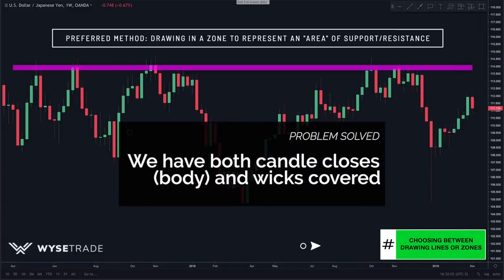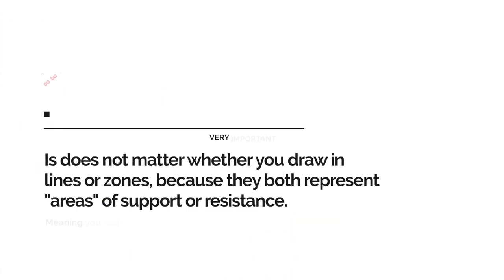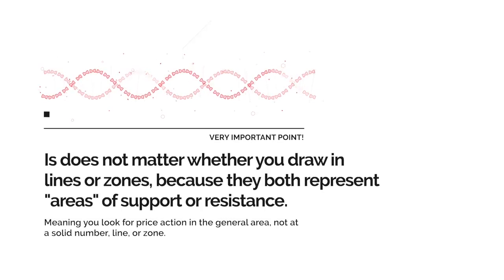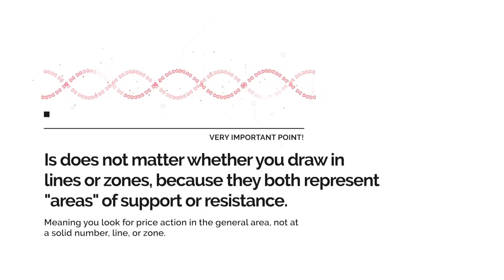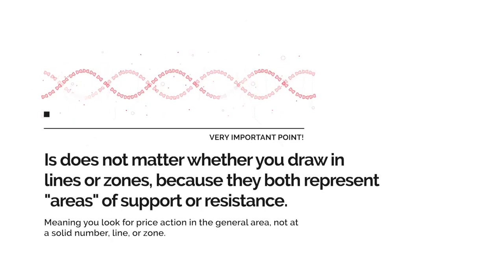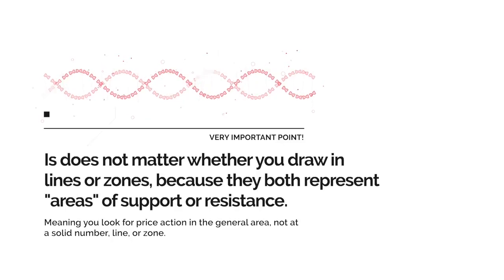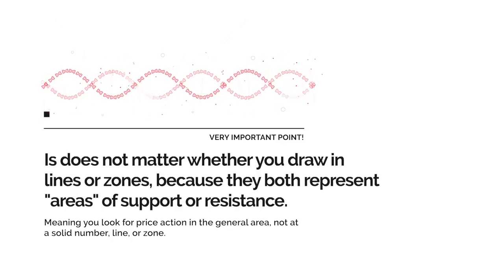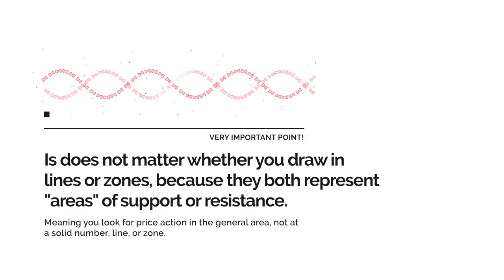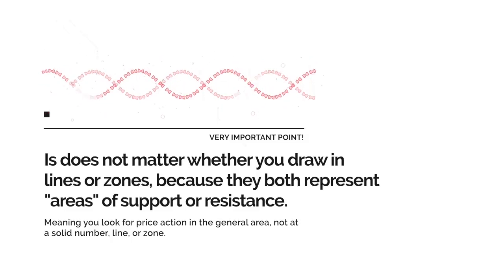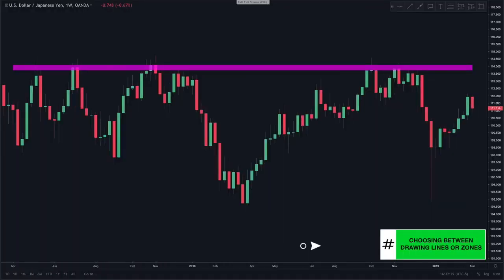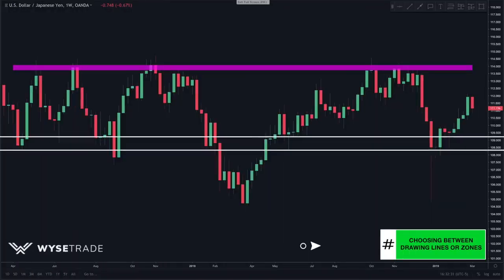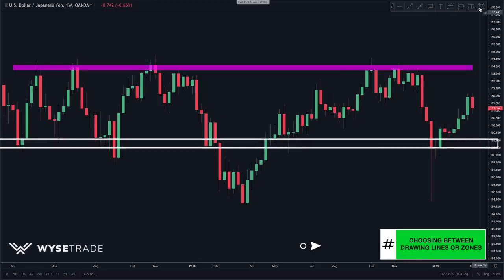The most important point: it doesn't matter whether you draw in lines or zones — either one works — because you still treat these lines and zones of support and resistance as areas. You are looking for price action to occur in the general area, not at a solid number line or zone. Moving on down we spot the next level and draw in a zone.